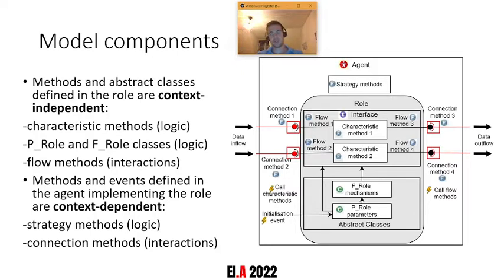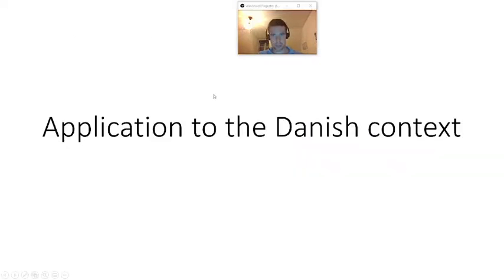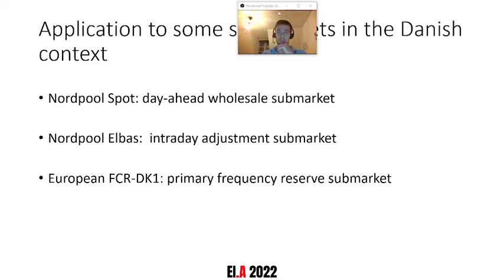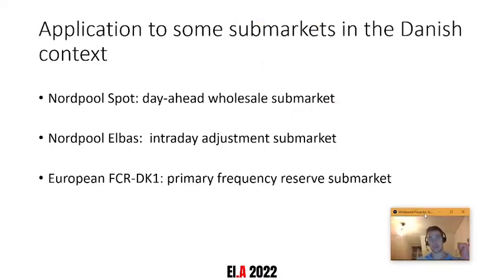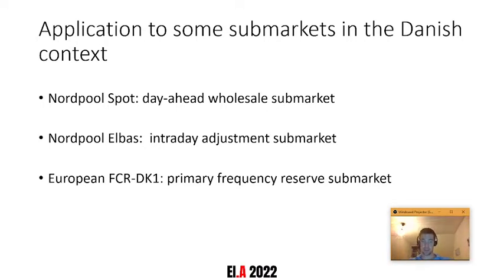Here we really start to see this differentiation between context-independent and context-dependent elements of a model. Now how does that look when implemented in a specific market context — in this case the Danish context? For this study we've taken three different sub-markets: the day-ahead sub-market, the intraday sub-market, and the primary frequency sub-market. They all serve different purposes and have different operational logics, so the test is to see how applicable our method is to these three different sub-markets.